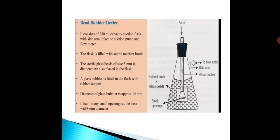The suction flask is filled with sterile nutrient broth. Sterile glass beads of 5 mm diameter are placed in the flask along with the nutrient broth. The glass beads are small ball-like structures which consist of holes or small pores. Microorganisms are trapped in these beads. These glass beads are made up of glass and have a small hole-like structure.